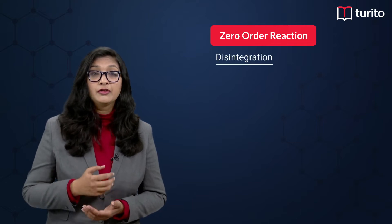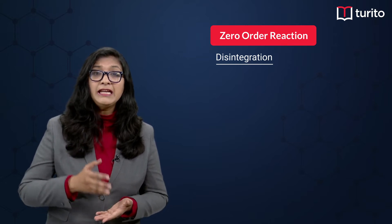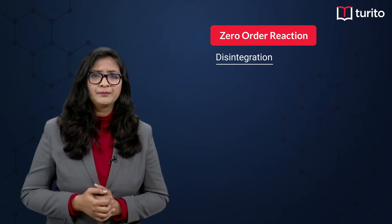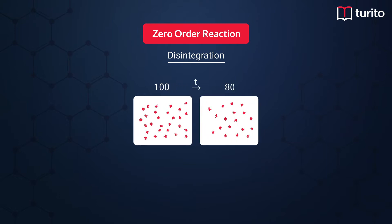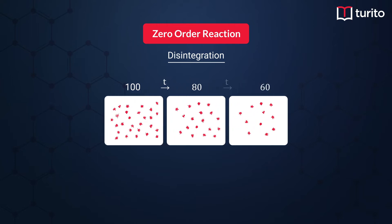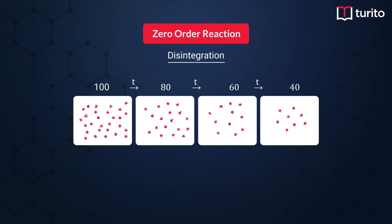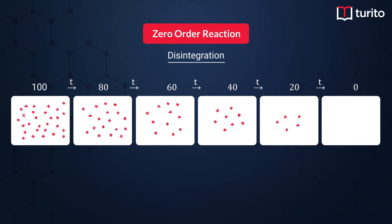For zero order reactions, there is a very simple rule for disintegration: if we have equal amounts of drop, then the time intervals will also be equal. For example, if a reactant drops from 100 to 80 — a drop of 20 — and that takes time t, then from 80 to 60 again takes t, from 60 to 40 again t, 40 to 20 again t, and 20 to 0 again t. Remember, zero order reaction is considered complete at 100%.